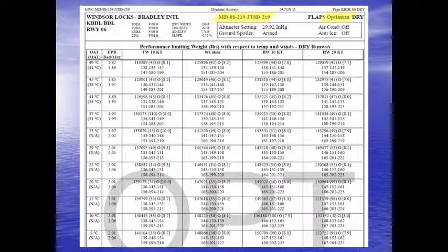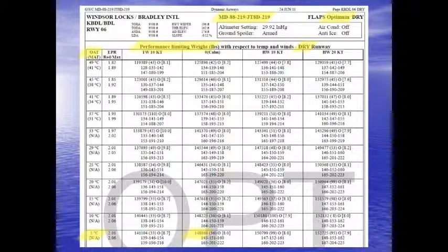Over on this side, we can see the outside temperature, and this table shows the performance-limiting weight in pounds with respect to temperature and winds for a dry runway. For calm winds at 5 degrees Celsius, we have a maximum takeoff weight of 148,866 pounds. It's worth noting that this particular MD-88 had a structural maximum takeoff weight of 160,000 pounds, so 148,866 is considerably less than that.